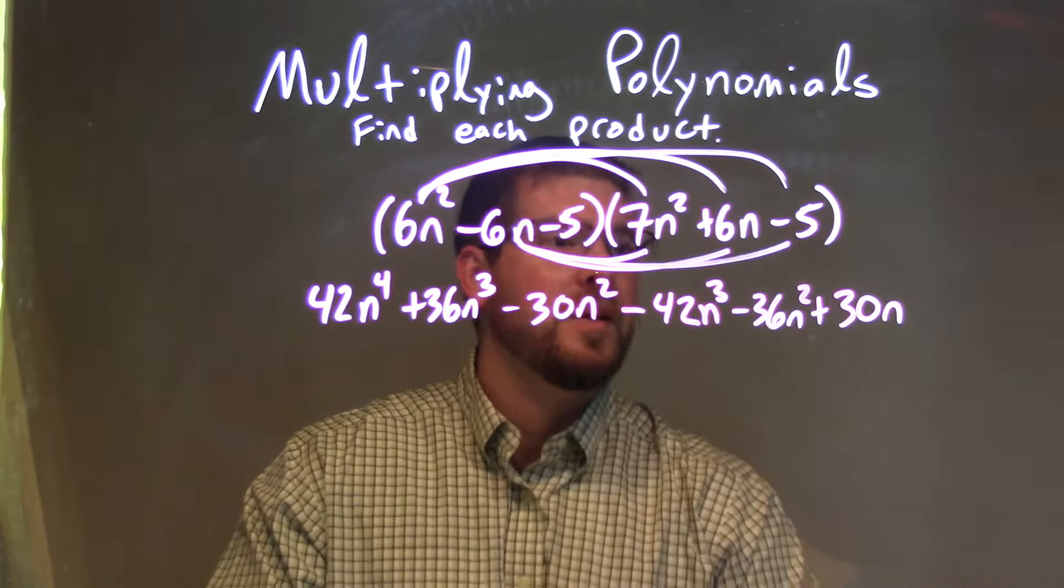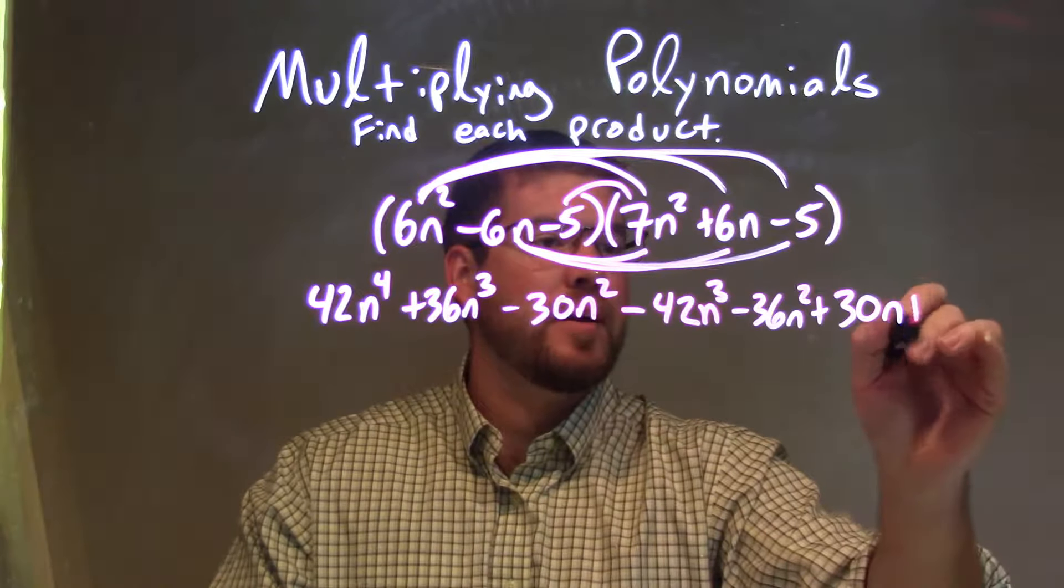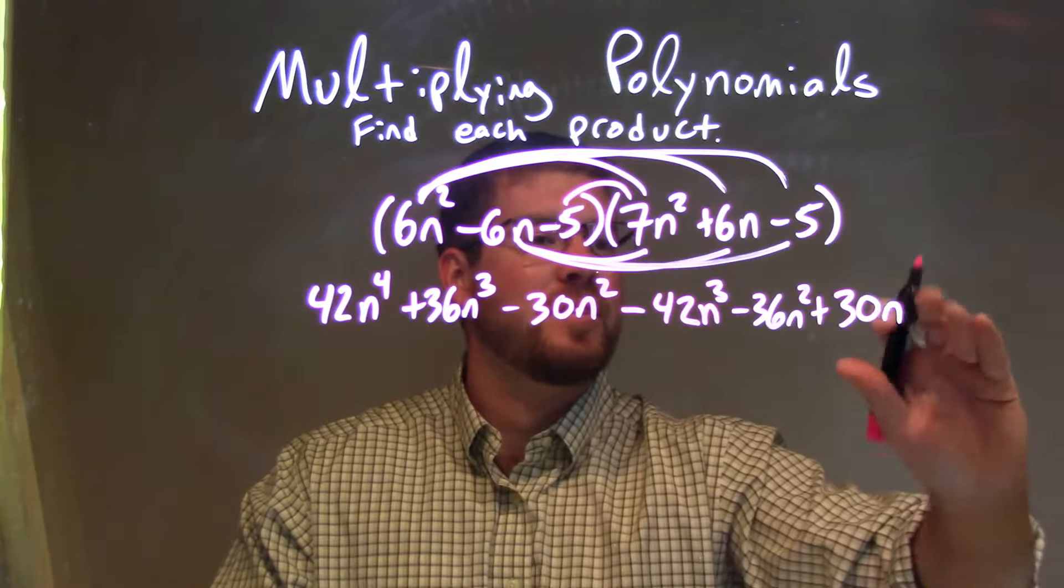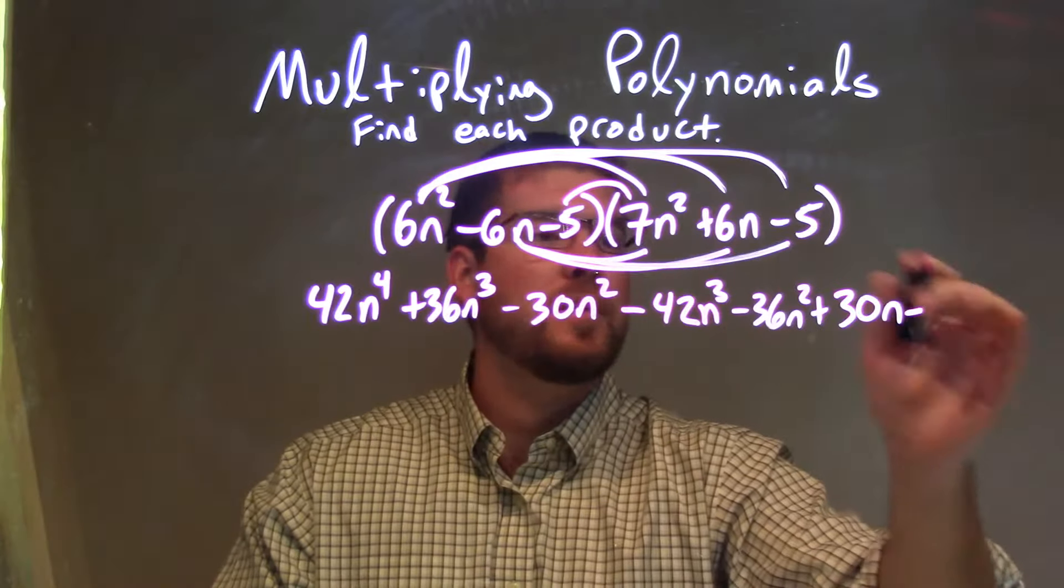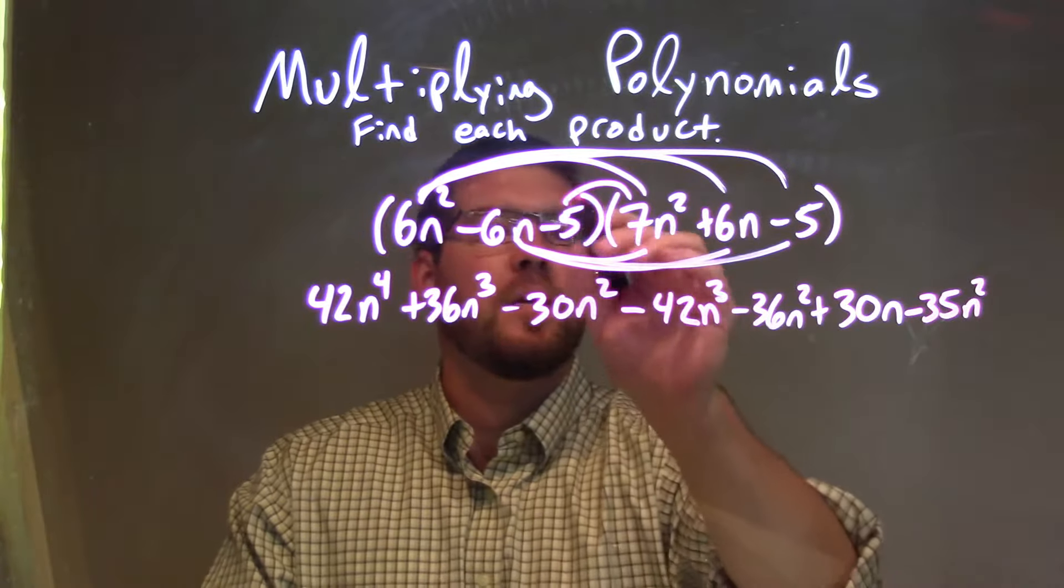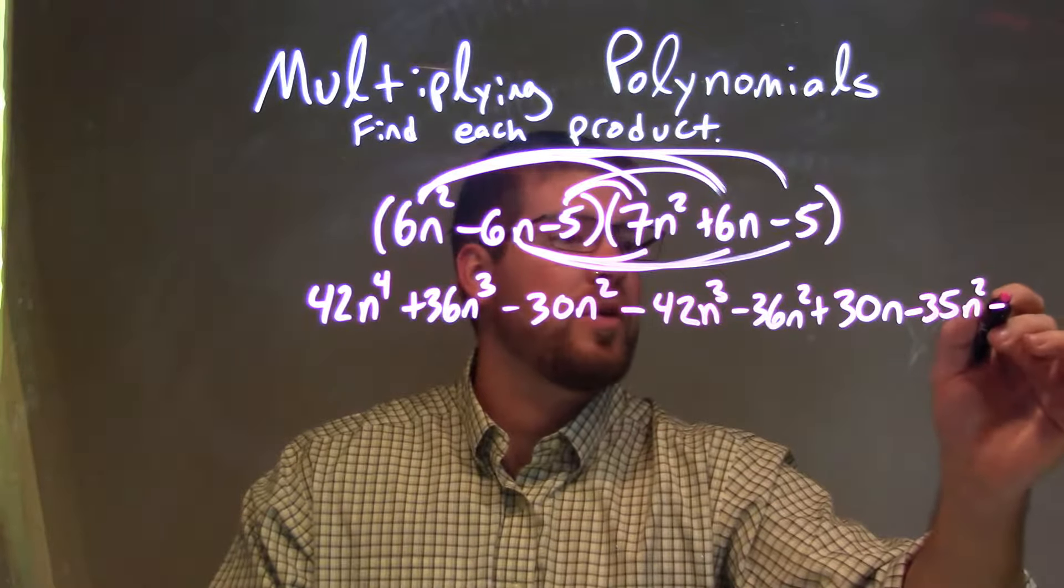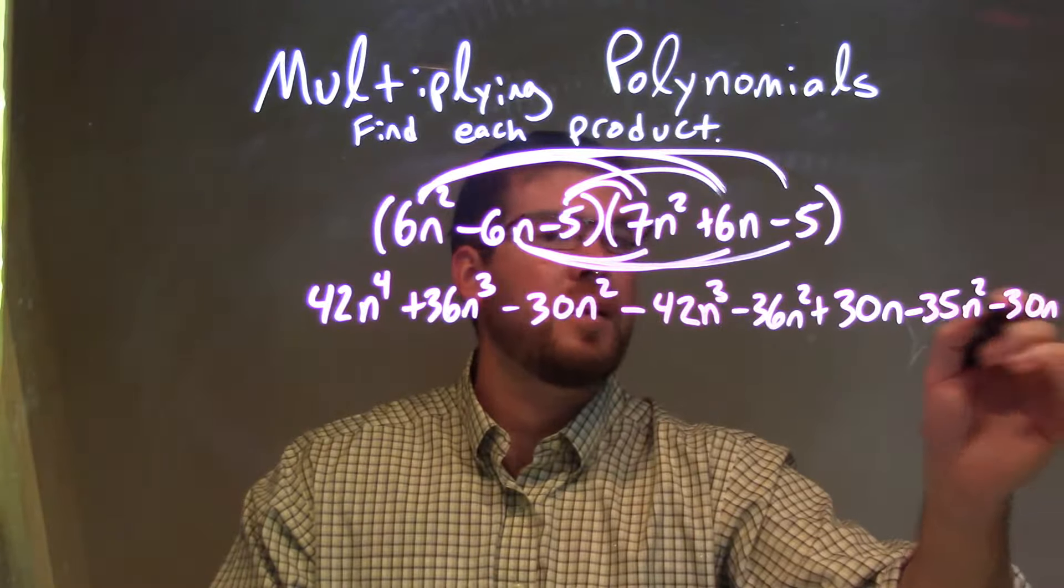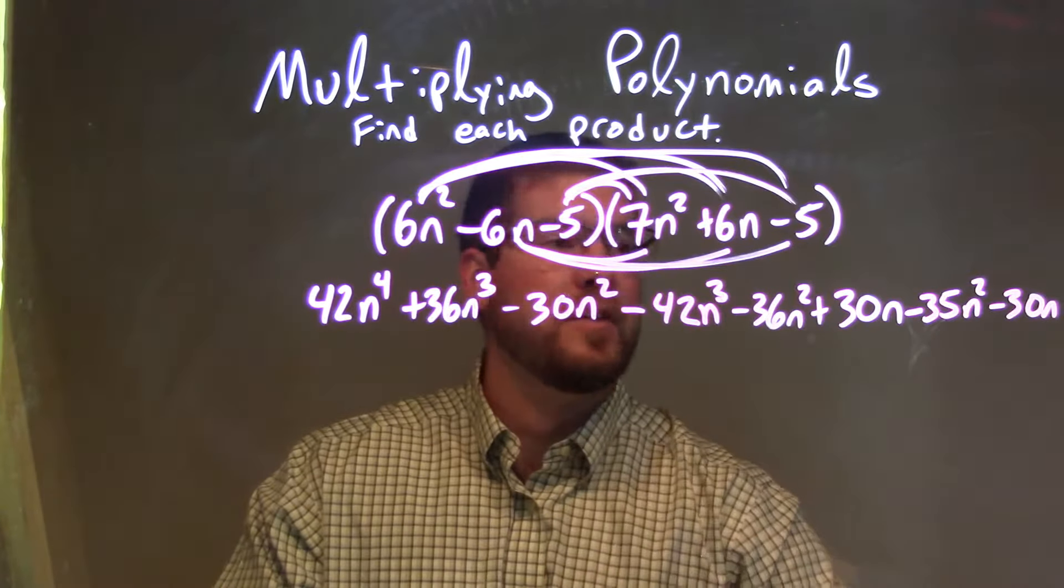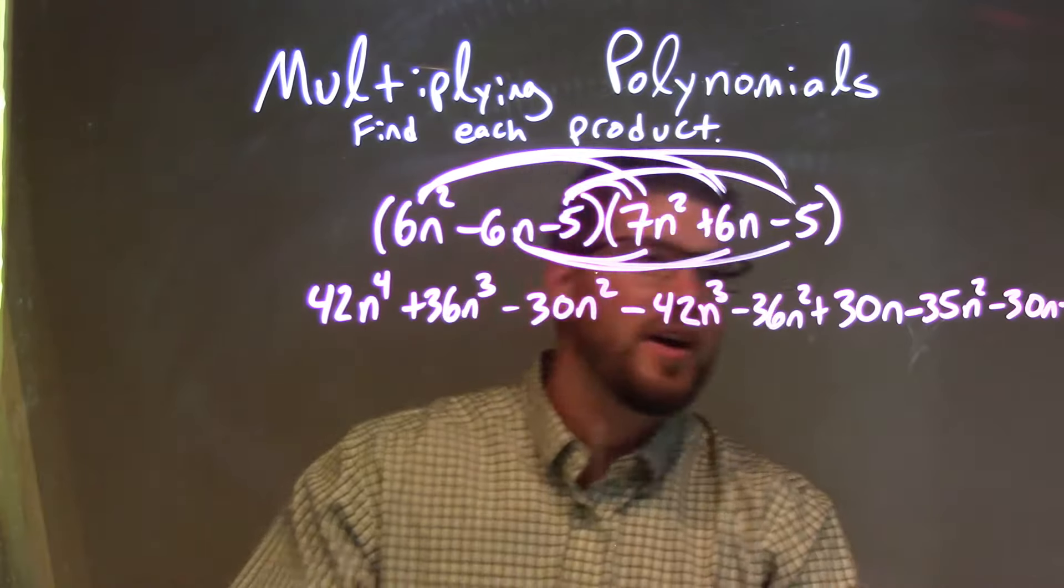Lastly, probably didn't leave myself enough room here. Minus 5 times a 7n squared is minus 35n squared. Minus 5 times 6n is a minus 30n. And lastly, minus 5 times a minus 5 is a positive 25. Barely fitting in.